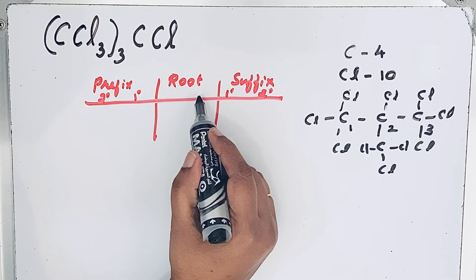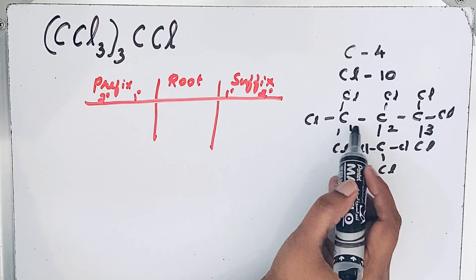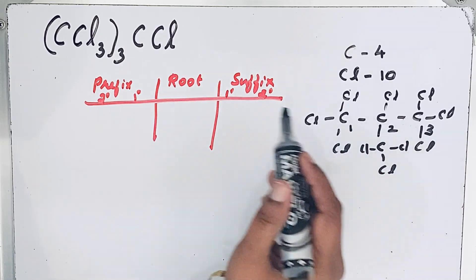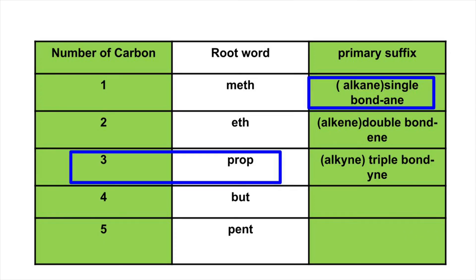For the root word, the parent: one, two, three. Look at the table—if the number of carbon is three in the parent chain, then the root word is prop. Then all single bond, so the primary suffix is ane.